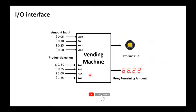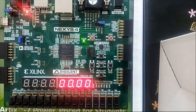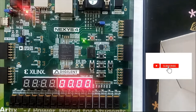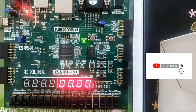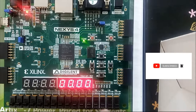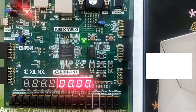In the next few seconds we will see the demonstration of the vending machine on the real-time FPGA board. These four switches represent the input: the first is for 5 cents, the second for 10 cents, the third for 25 cents, and the fourth for 50 cents.